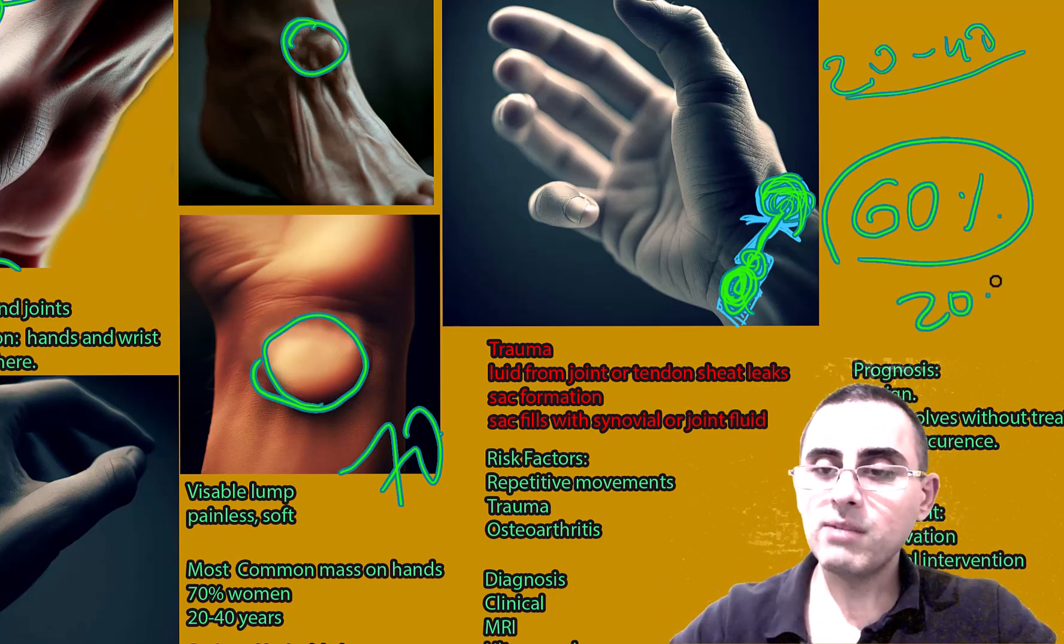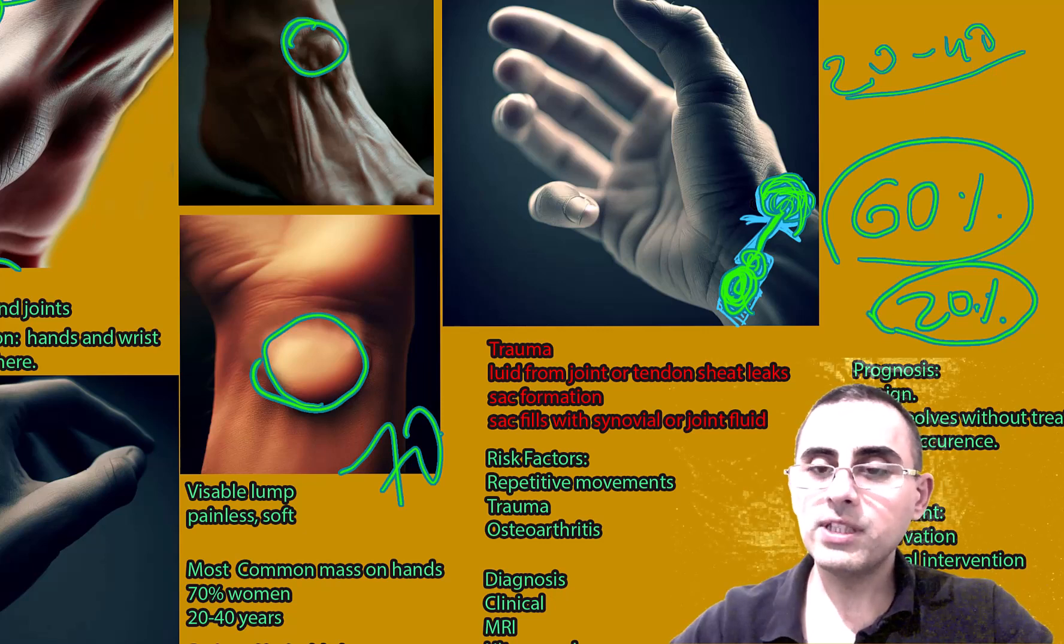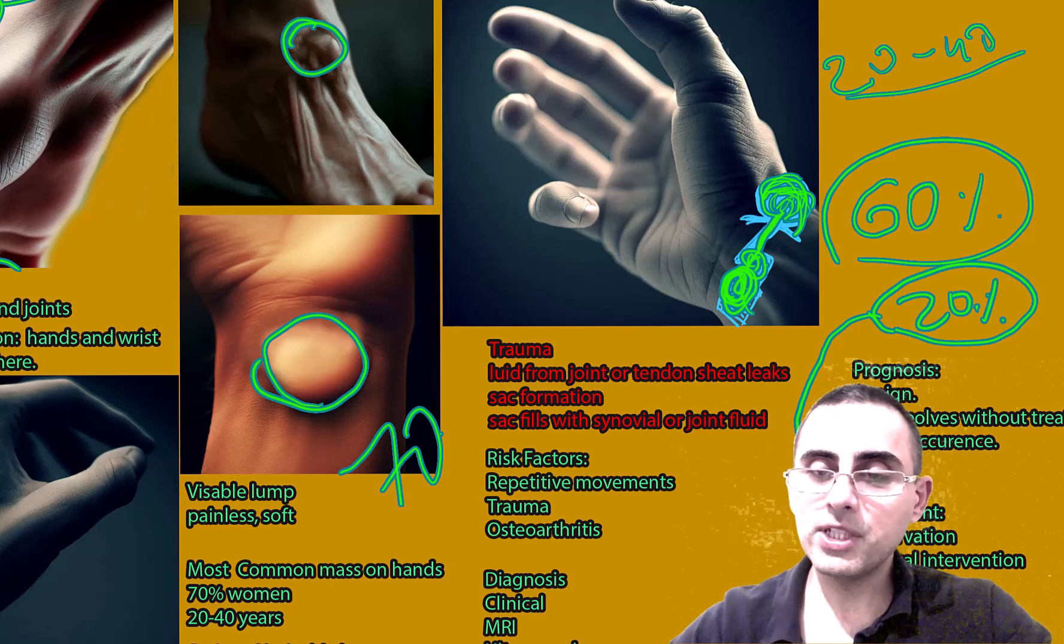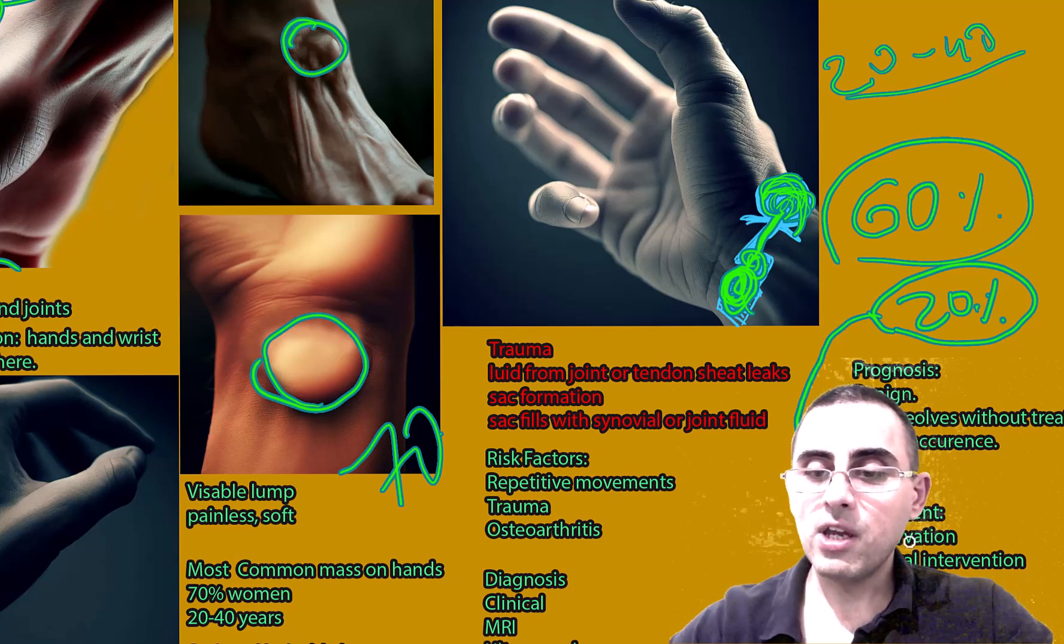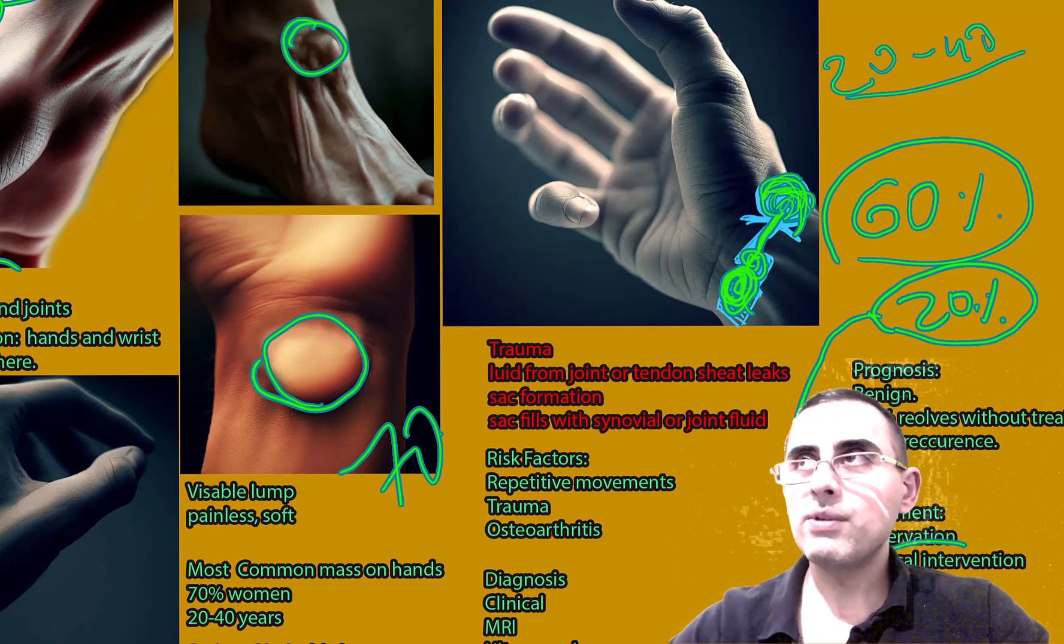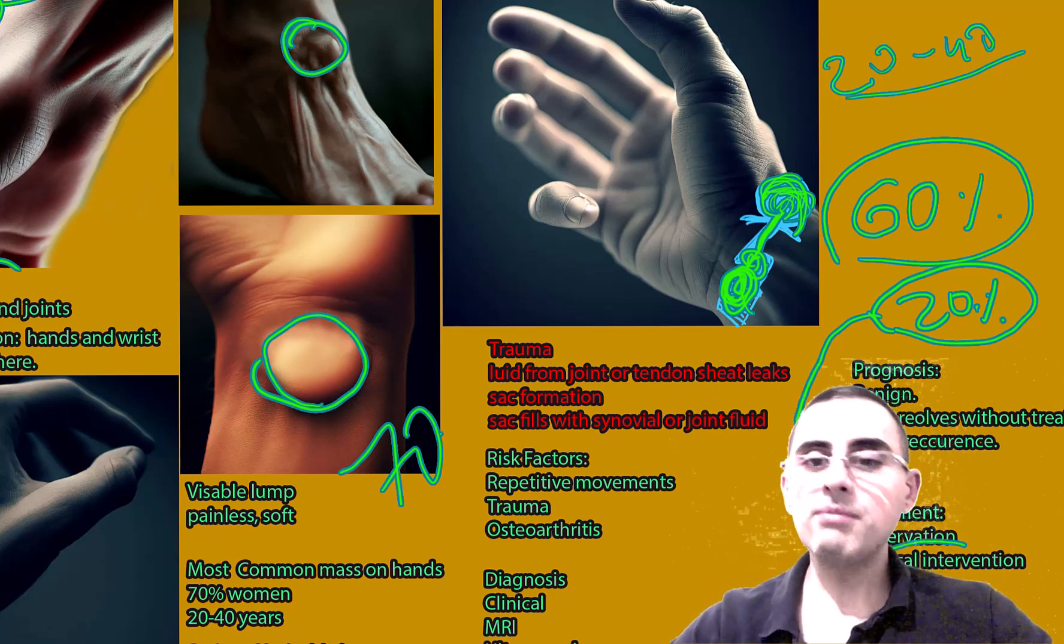So in 20% of cases, this condition can develop again even if you treat. What is treatment? Treatment options are aspiration or surgical intervention. But in many cases, clinicians just advise the patient to observe, observation for a few years, because it will not create any serious problems.